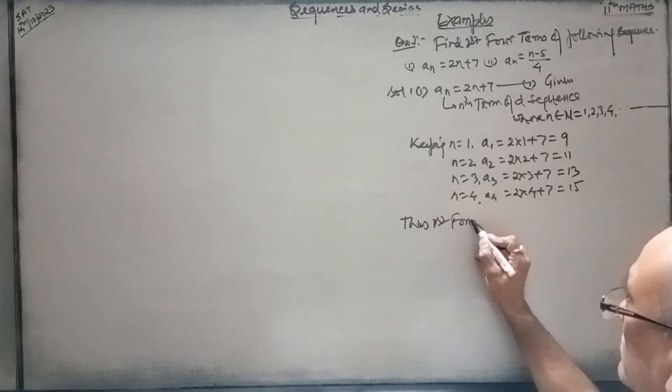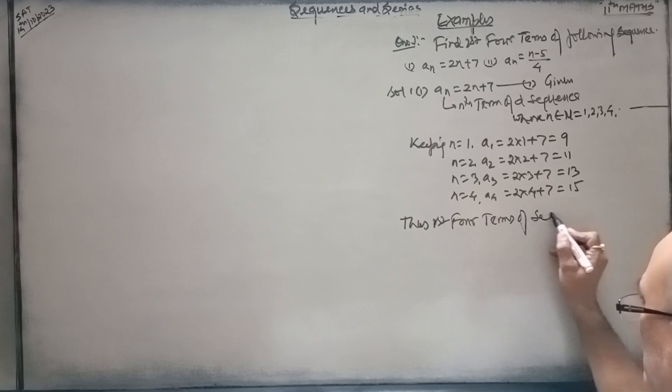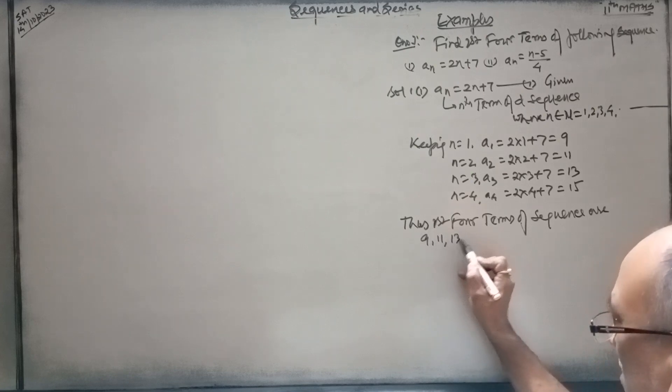The first four terms of the sequence are 9, 11, 13, and a4 is equal to 15.